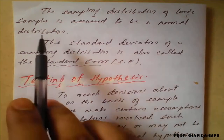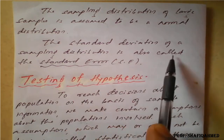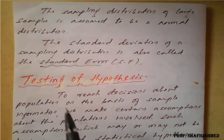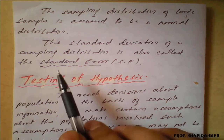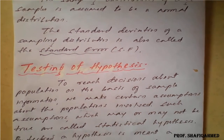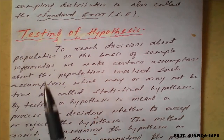When we group them according to their frequencies, that is called a sampling distribution. The sampling distribution of large samples is assumed to be a normal distribution. Large samples means more than 30. The standard deviation of a sampling distribution is also called standard error. These definitions are very important — you need to remember them as they may be asked in the examination.